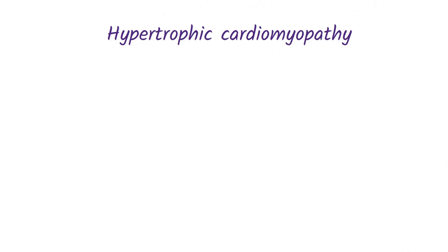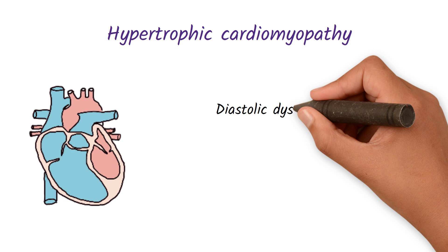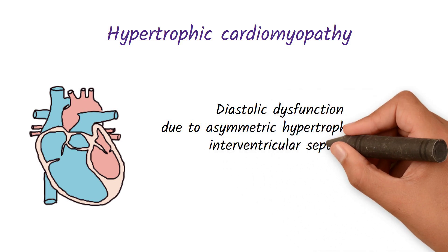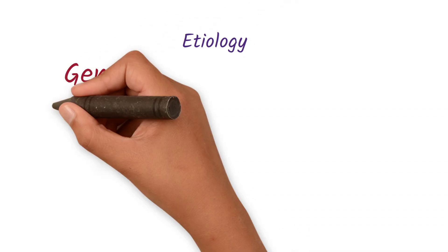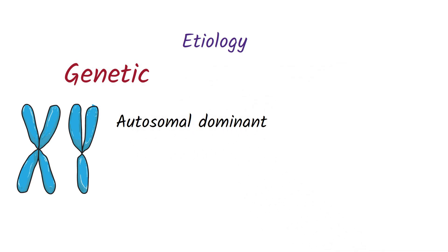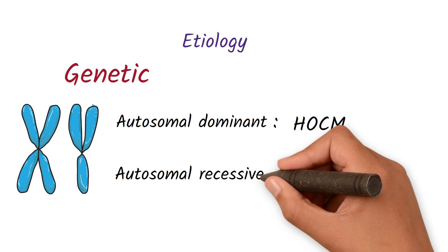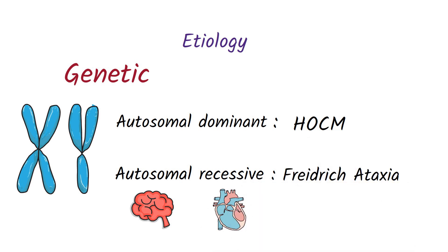Moving on to hypertrophic cardiomyopathy. Hypertrophic cardiomyopathy is a diastolic dysfunction — not a systolic dysfunction like dilated cardiomyopathy — due to asymmetric hypertrophy of the interventricular septum, mostly directed to the left side of the heart. The etiology is mostly genetic: it can be an autosomal dominant condition called hypertrophic obstructive cardiomyopathy due to a mutation of the myosin heavy chain protein, or an autosomal recessive condition called Friedreich's ataxia, which is a triad of neurological symptoms, hypertrophic cardiomyopathy, and diabetes mellitus.